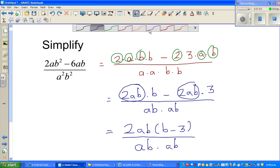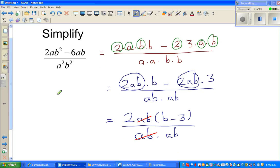What can you cancel? I can cancel this 2ab with this ab. That gets cancelled. So what can you write now? This is 2 times b minus 3 over ab, and that's your final answer. You can't simplify this any more, so this is the answer.